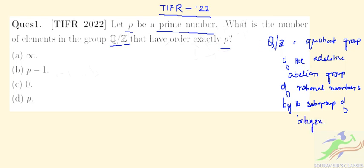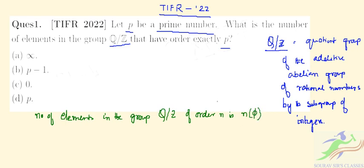So this is Q by Z, the quotient group. Now we know that the number of elements in the group, in this quotient group of rational numbers by integers of order n, is phi of n. It can be written as phi of n.